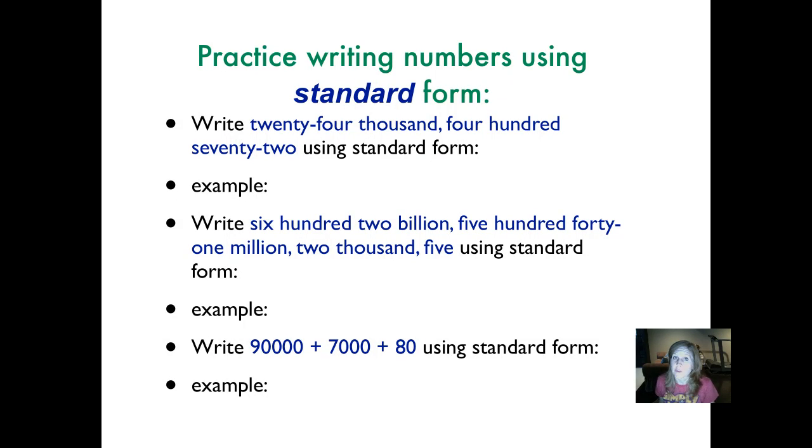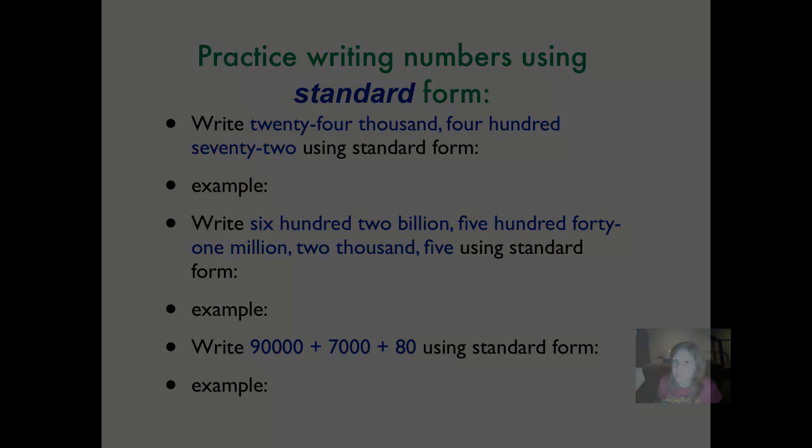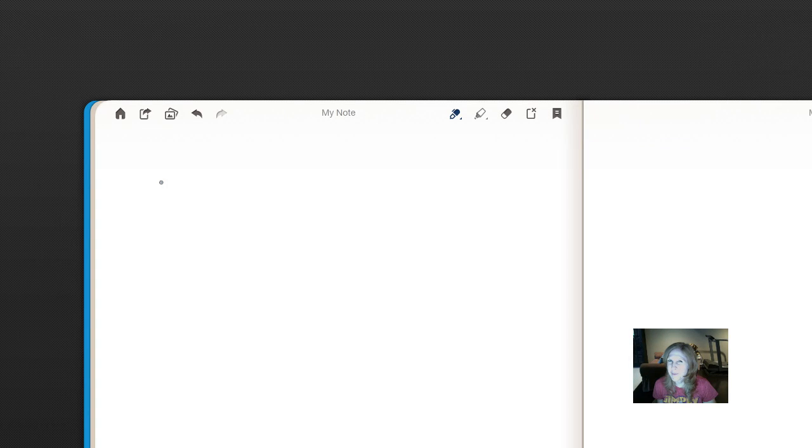Now you're going to use a number that's written in expanded form and write it using standard form. You're going to write the number 90,000 plus 7,000 plus 80 using standard form. Okay,